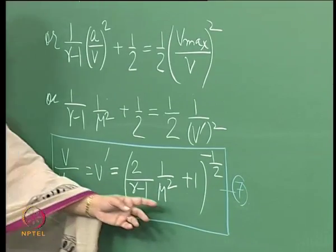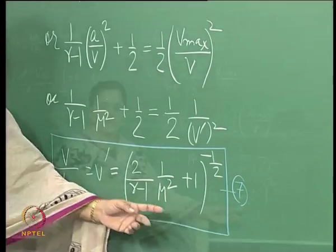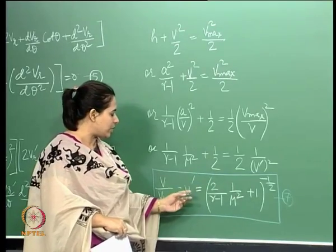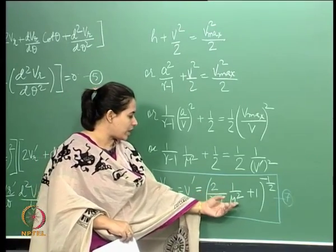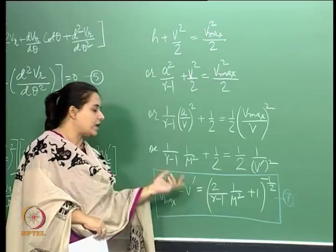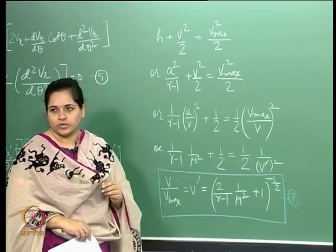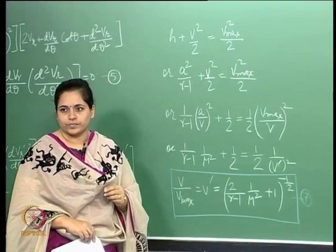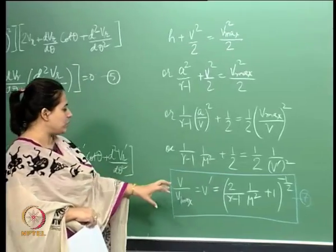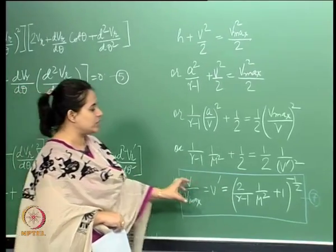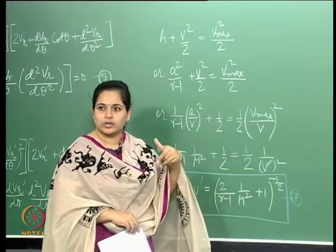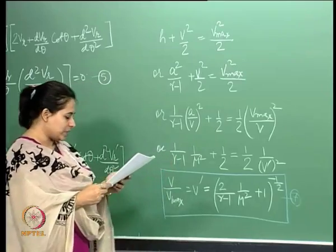What we have basically done is developed a relationship of this V_dash parameter with the Mach number. Given the Mach number we can calculate V_dash and vice versa. Let us see whether we should be able to use this relationship in our solution to the Taylor-Maccoll equation.